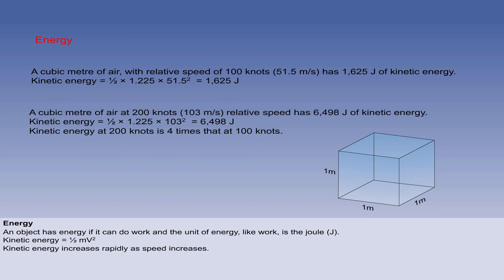However, because kinetic energy varies with speed squared, at 200 knots, which is 103 metres per second, the same cubic metre of air would have 6498 joules of kinetic energy. Notice that when the speed doubles, there is four times the kinetic energy.